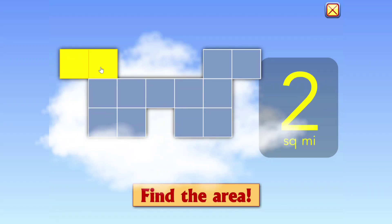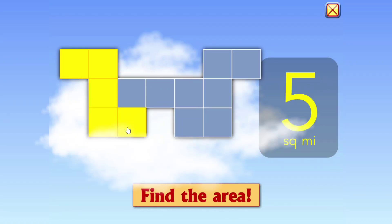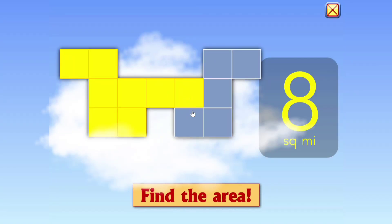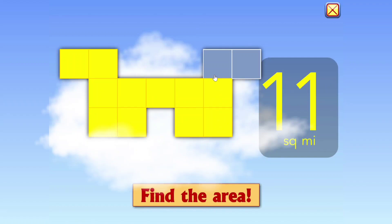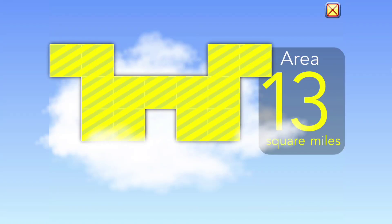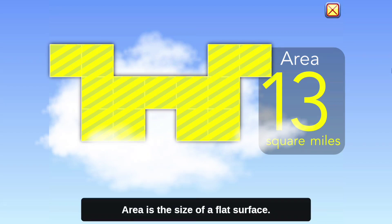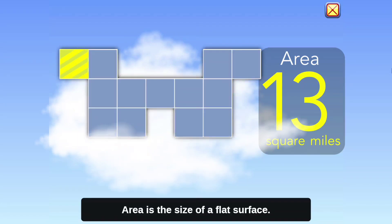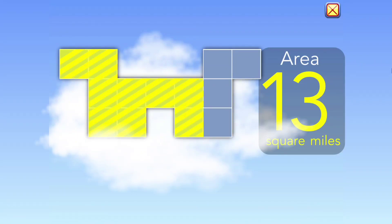One, two, three, four, five, six, seven, eight, nine, ten, eleven, twelve, thirteen — thirteen square miles. Area is the size of a flat surface.